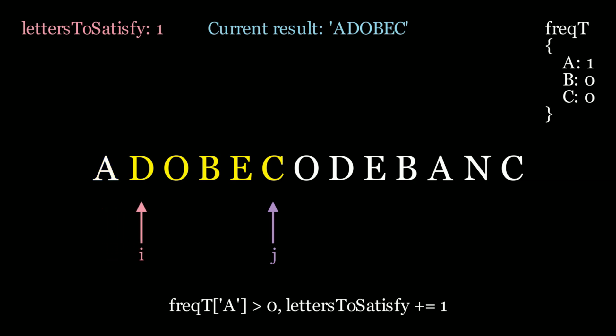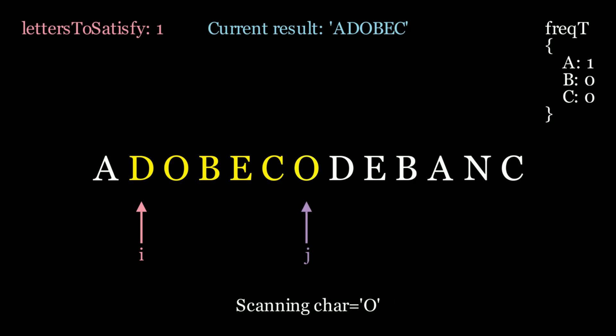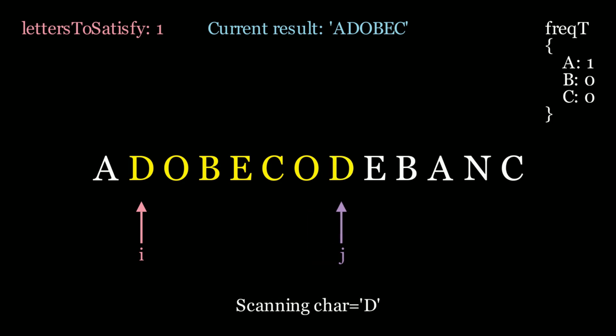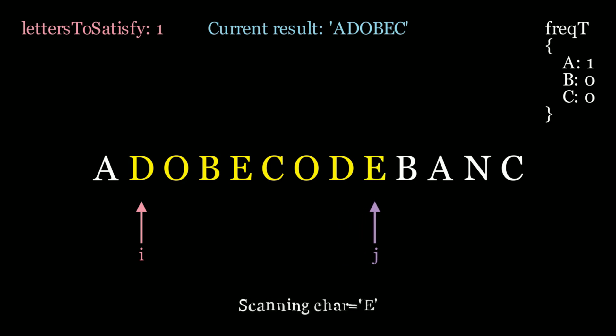We're now looking at the substring d, o, b, e, c. In the frequency table we only have a b and a c — we're missing an a because we shrank the window, and letters to satisfy is 1. We need to satisfy an a, which means we need to move j until we find a new a. We scan o — not in our frequency table, move along. We scan d — not in the frequency table, move along. E is not in the frequency table, move along.